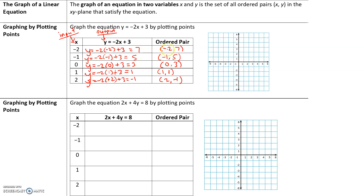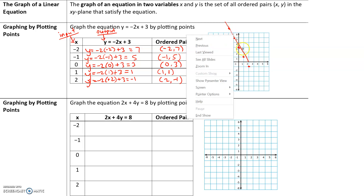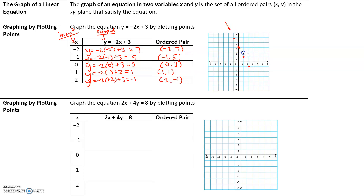Let's plot these points. Our first point is (-2, 7), then (-1, 5), then (0, 3), then (1, 1), and finally (2, -1). Now if we did it correctly, all these points should make a straight line, which they do. So we draw our line — you'll have to ignore my lack of a straight line because I don't have a ruler, but it should be a straight line.